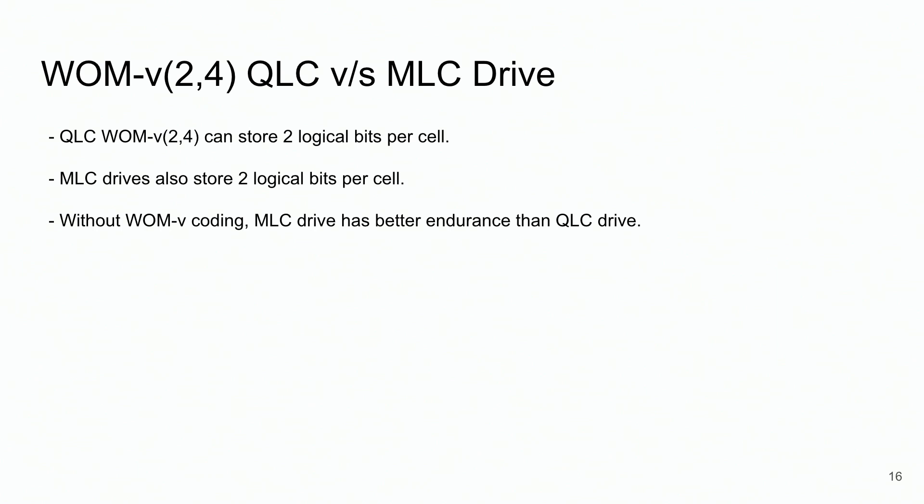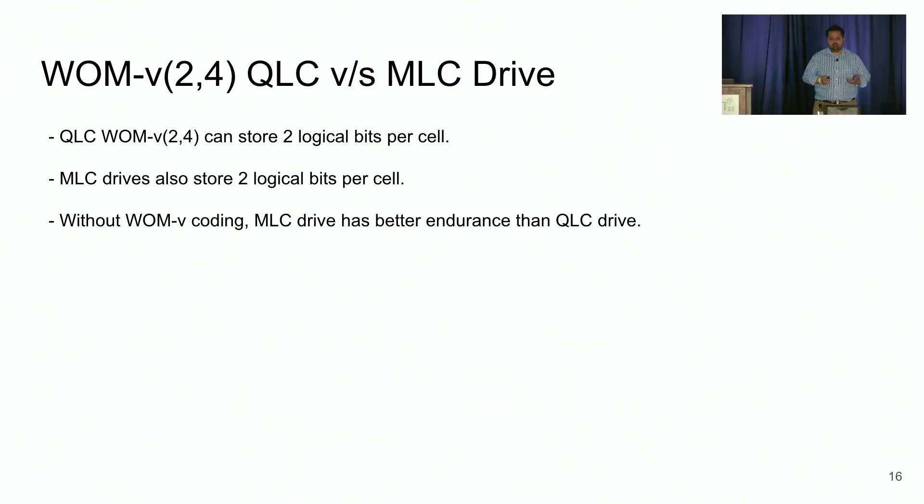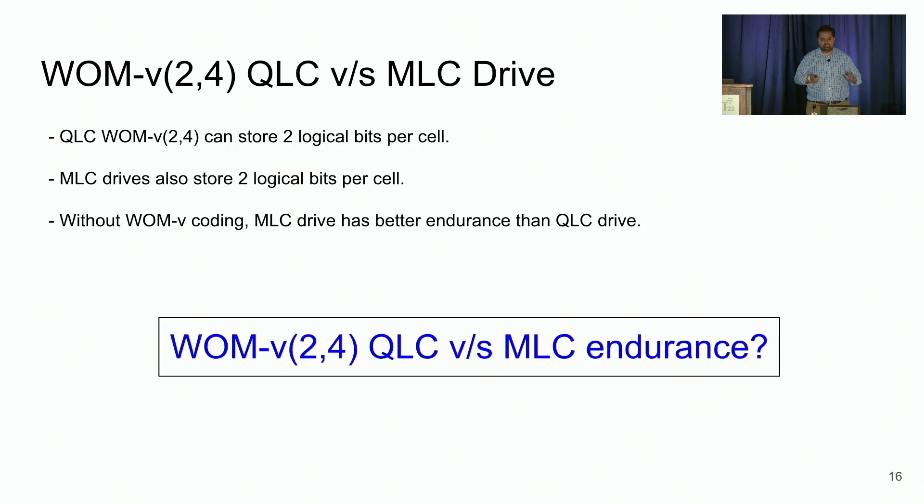And one final question that we want to ask ourselves is with WOM V(2,4) coding scheme, we are basically reducing the logical space of QLC to store only two bits per cell. Now, this is equivalent to using MLC drive that also stored two logical bits per cell. And without using WOM V coding, MLC drive has better endurance than QLC drive. So the key question that we want to answer here is how does WOM V(2,4) QLC endurance compare to MLC endurance?